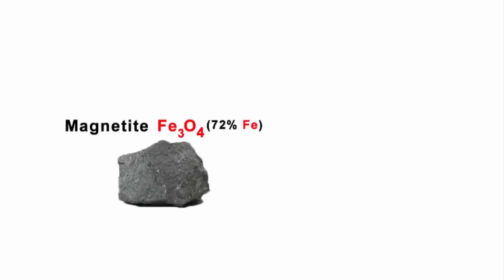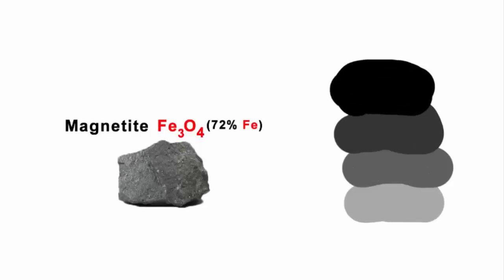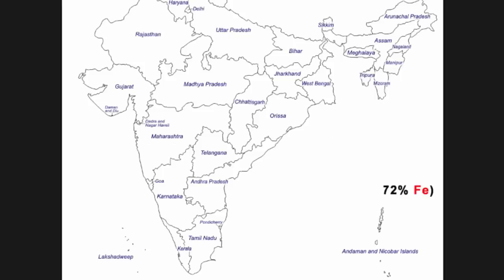The color of magnetite ranges from dark grey to black. In India, it is found in the states of Andhra Pradesh, Jharkhand, Goa, Kerala, Tamil Nadu, and Karnataka.